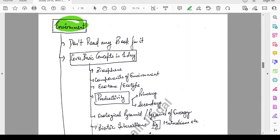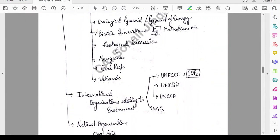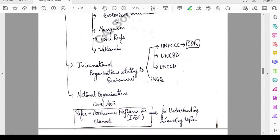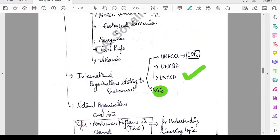Next is environment. Here, I would say don't read any book for it. Rather cover basic concepts in a day. I have mentioned in this PDF. Then you need to cover international organizations relating to environment. For example, on climate change, biodiversity, desertification and any international NGO. National organizations and acts relating to the environment. For example, for the Tiger Conservation and Wildlife Protection Act, Environment Protection Act. You can refer Shankar IAS YouTube channel for covering these topics.